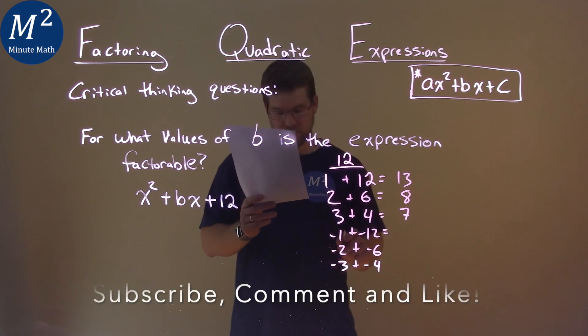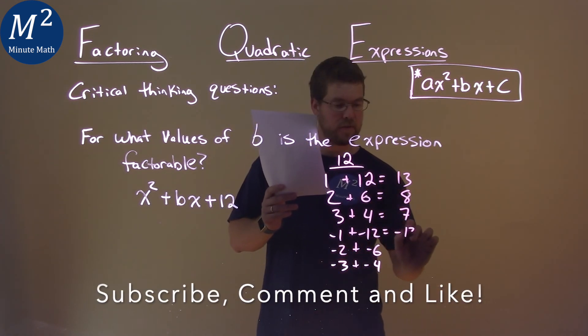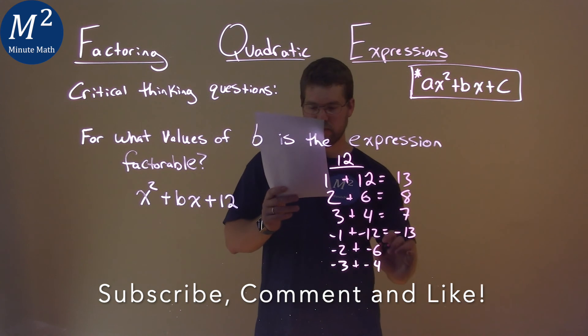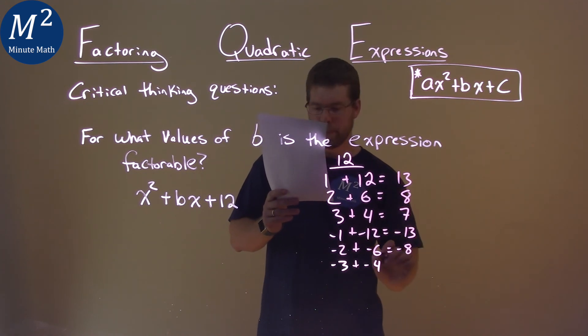Can't forget the negatives. Negative 1 plus negative 12 is negative 13, negative 2 plus negative 6 is negative 8, and negative 3 plus negative 4 is negative 7.